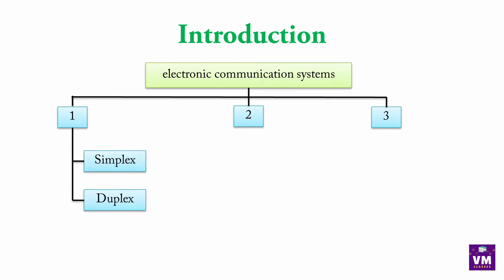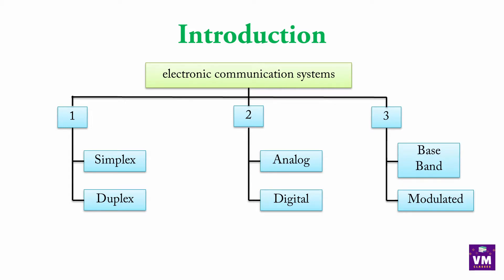First jo hai usmein one way ya two way communication hai, to yahan do types hai. Sabse pehla hai simplex, doosra hai duplex. Duplex mein phir se subtypes aate hai — full duplex and half duplex. Doosre type ke subtypes hai analog and digital communication. Aur third mein aate hai baseband and modulated communication. In subtypes mein kya hota hai, kis tarah se communication hota hai — yeh hum aage dekhenge.